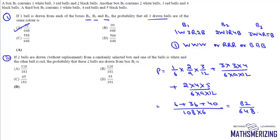Now the second question is 2 balls are drawn without replacement from a randomly selected box and one of the ball is white and the other ball is red. The probability that these 2 balls are drawn from box B2. Now this is Bayes' theorem question.